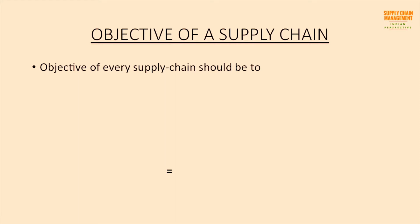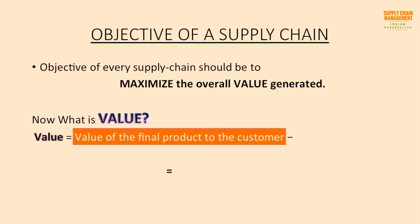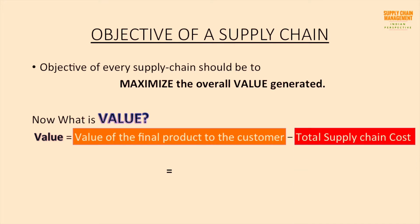This slide answers: what is the objective of a supply chain? The objective of any supply chain should be to maximize the overall value generated. Value of any supply chain is the difference between the value to the customer and the total supply chain cost. This value is also famously called supply chain surplus.